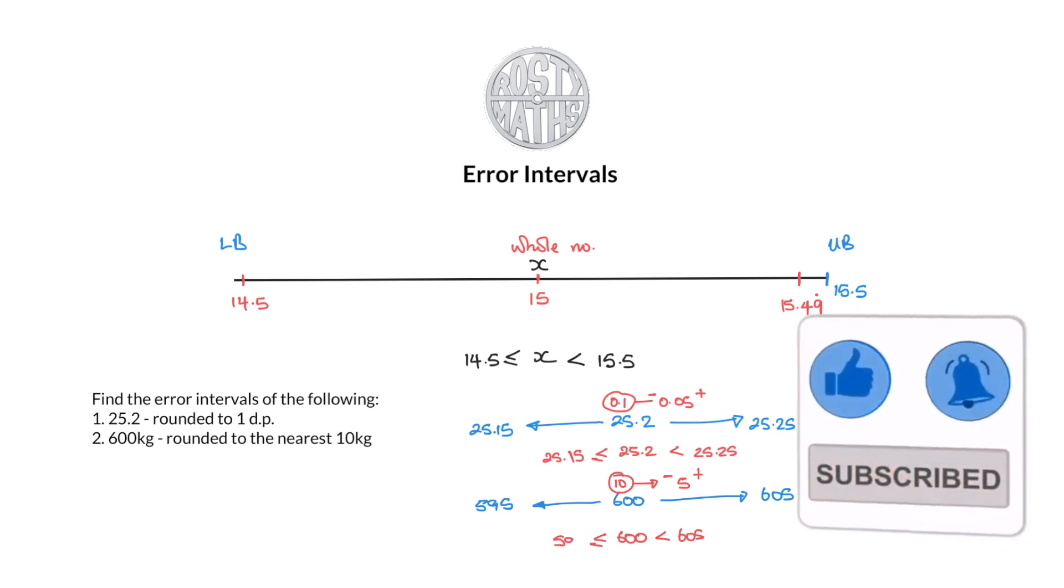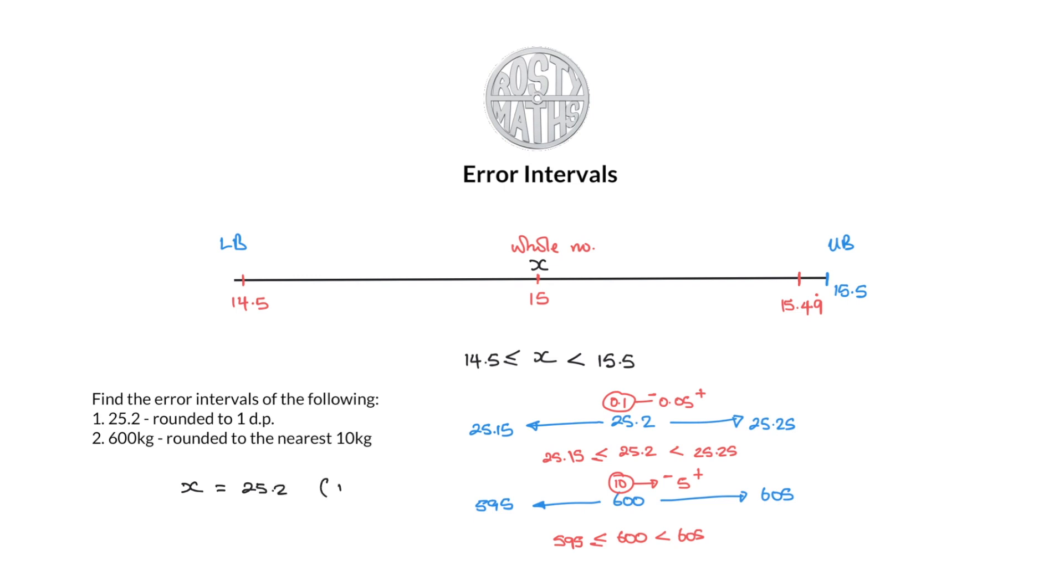Before I finish off, I'm just going to say one thing. Sometimes rather than give you the question like this, your examiner might give you the question to say that x is actually equal to 25.2 rounded to the nearest one decimal place. If they give it to you like that, the only difference in your answer is that it will have an x in it. So your answer will look like x is greater than or equal to 25.15 and less than 25.25. They may introduce a little bit of algebra in there just like I have done up here.